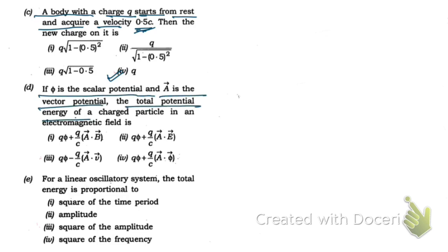Then: if φ is the scalar potential and A is the vector potential, the total potential energy of a charged particle in an electromagnetic field is given by qφ - q(A·v). For a linear oscillatory system, the total energy is proportional to square of the amplitude. This is the answer.